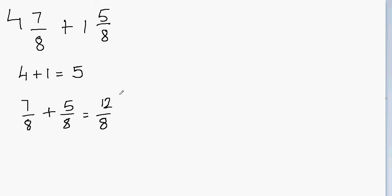Now 12/8, we can convert this into the mixed number form. Let's convert it. So 12 divided by 8. How many times does 12 go into 8? Well, 1 time. 8 times 1 is 8. And then 12 minus 8 will be 4.